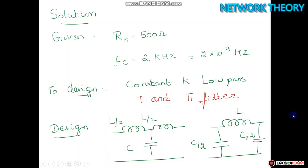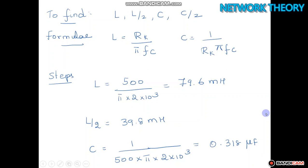Now according to the formula of constant K low pass filter we know L is equal to RK by pi FC. C is equal to 1 by RK pi FC. Now we have to find out from the diagram L, L by 2, C, C by 2.